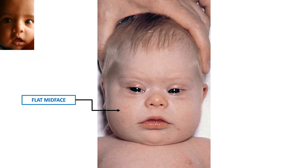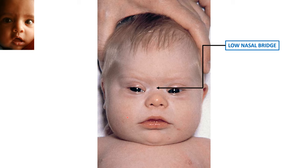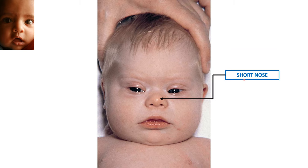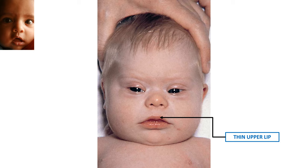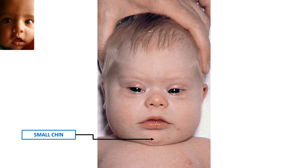You can see the flat mid-face, the depressed nasal bridge, and the short or small nose. You can also see a smooth philtrum in comparison to the other baby, along with the thin upper lip and the smaller chin.